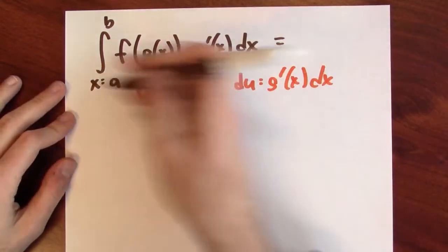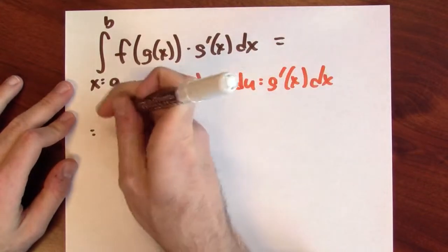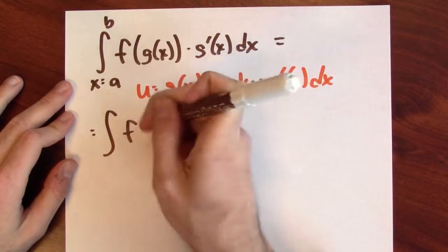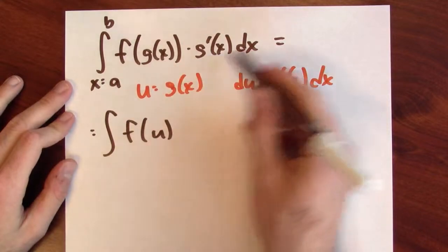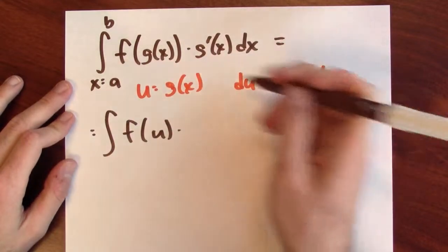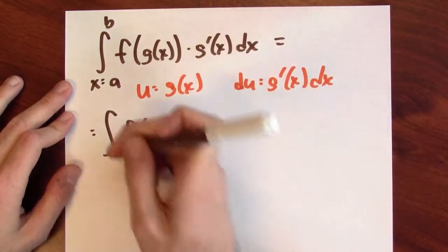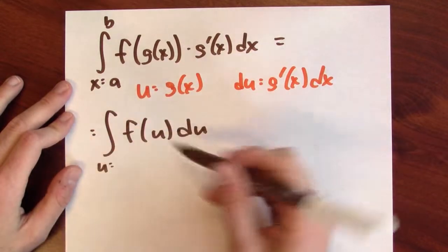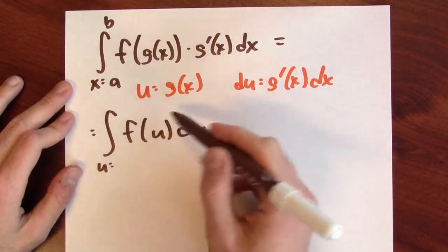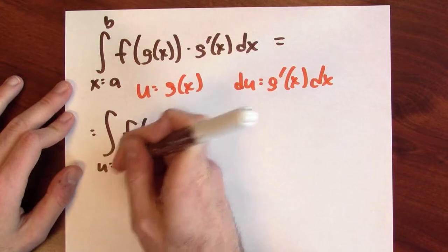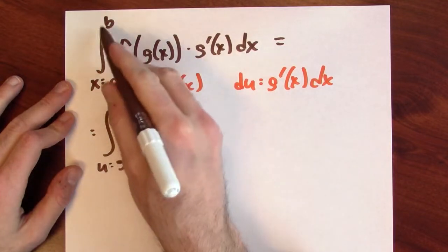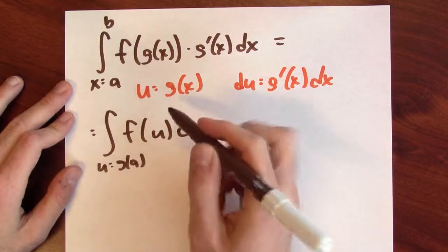And in that case, this integration problem becomes the integral of f(u), and u is g(x) times this. This is du, but now I've got to change the bounds of integration. When x is equal to a, u is g(a), and when x is equal to b, u is g(b).